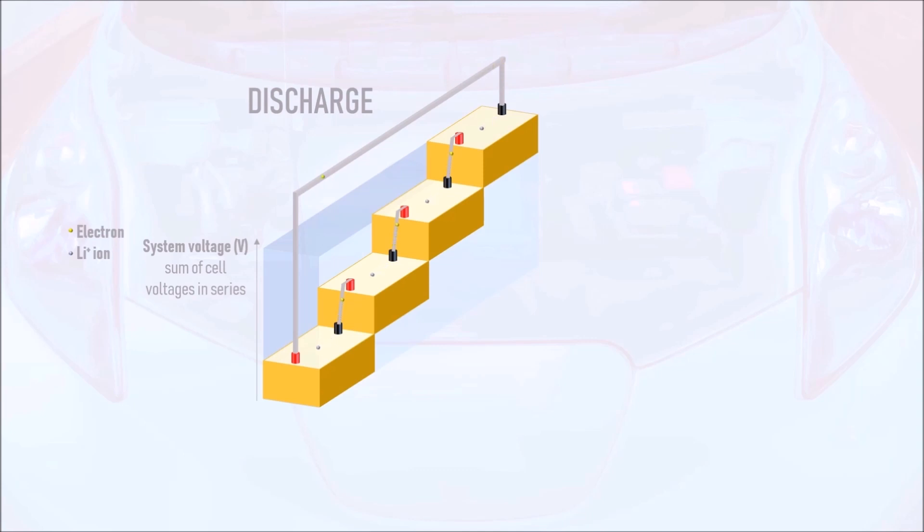During discharge, electrons climb up the stairs in the battery pack, from the negative terminal of one step to the positive terminal of the one above it, whilst lithium-ions travel from the negative to the positive terminal inside each cell. Electrons from the top cell are pushed out into the external circuit, powering the car's electric motor as they climb down the entire system voltage to reach the positive terminal of the bottom step. The opposite happens during charging.